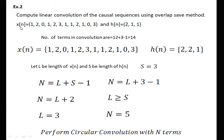Now see the next problem. The input sequence x of n and impulse response h of n are given. The length of x of n is 12 and the length of h of n is 3, so the number of terms in the linear convolution are 12 plus 3 minus 1 equals 14. Let capital L be the length of x of n and capital S be the length of h of n. S equals 3. From the linear convolution formula, N equals L plus S minus 1, so N equals L plus 3 minus 1, giving N equals L plus 2.